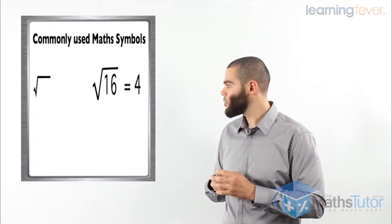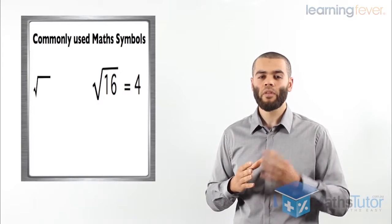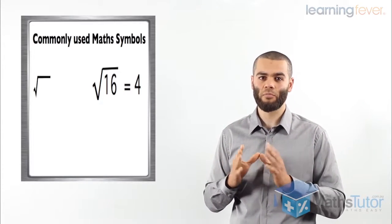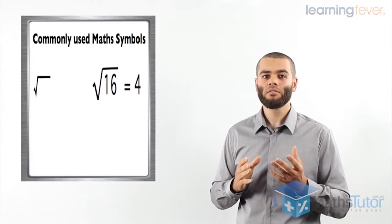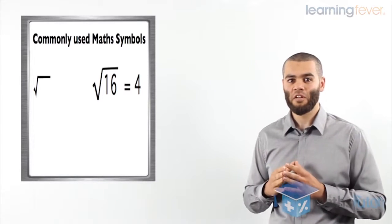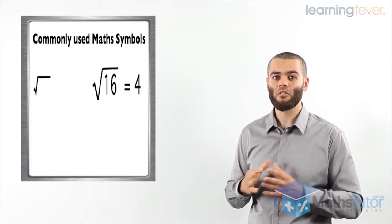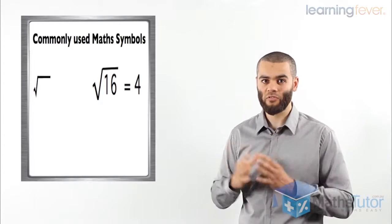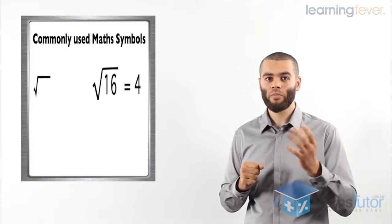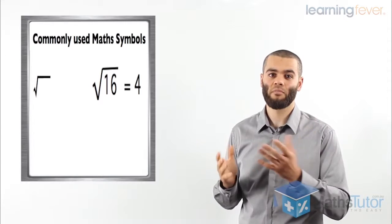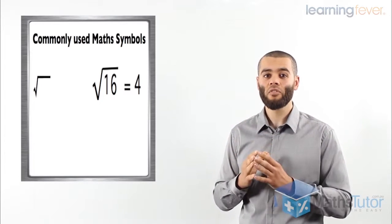We also have the square root symbol, which looks for a number that multiplies itself to get the number under the square root sign. For example, the square root of 16 — what number multiplies itself to get 16? The answer is 4, because 4 times 4 equals 16. Another example: the square root of 100 is 10, because 10 times 10 is 100.